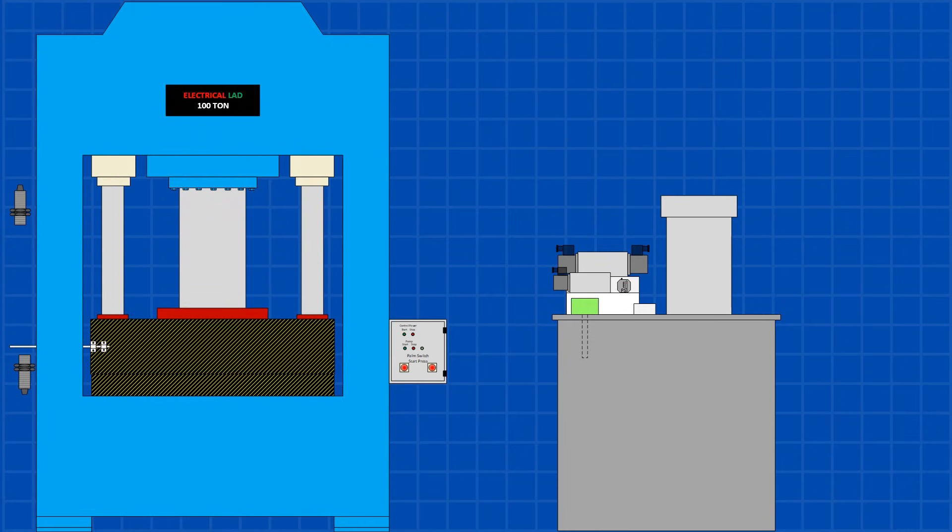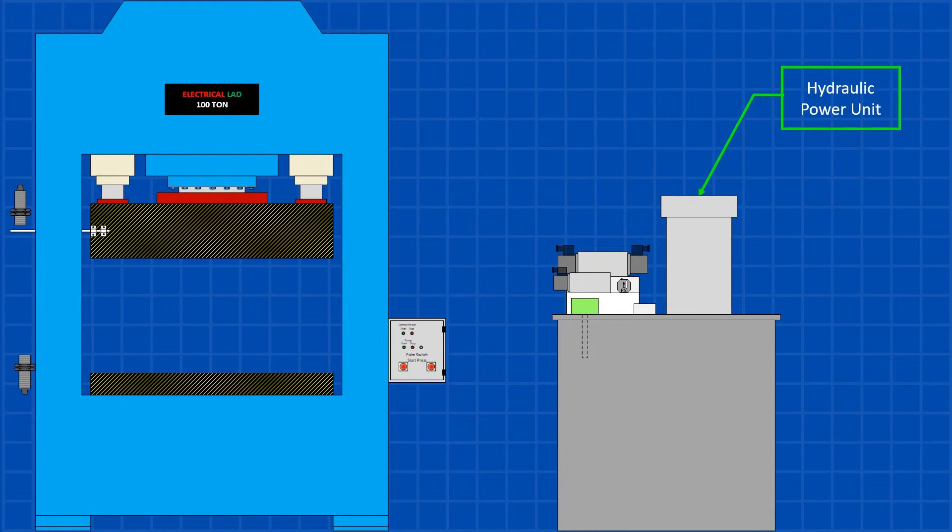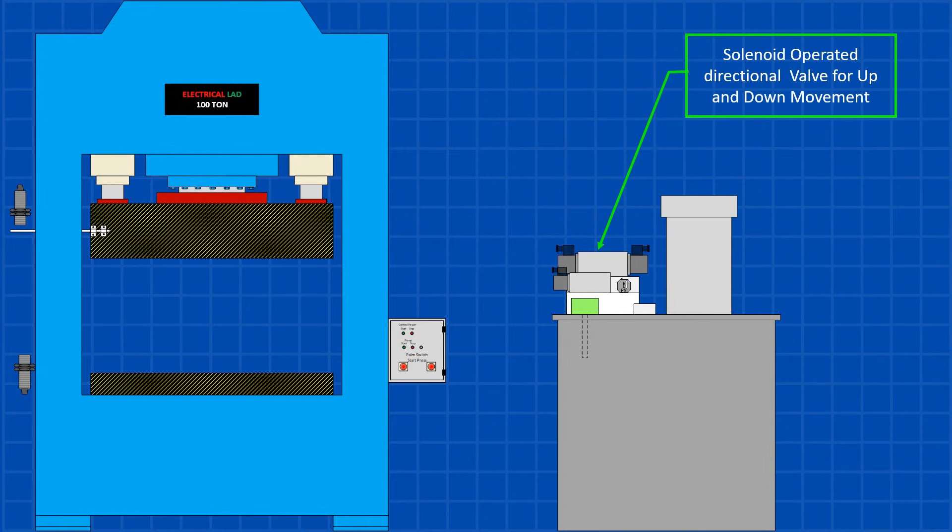The hydraulic press relies on a power unit that delivers fluid to the cylinder at a specified pressure. In addition to the pump and motor, a four-way three-position directional valve, when energized, directs fluid to the cylinder, enabling its up and down movement.